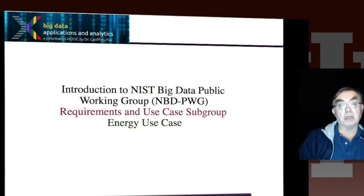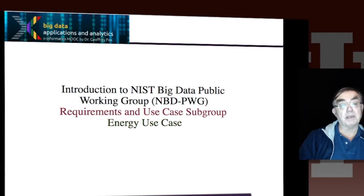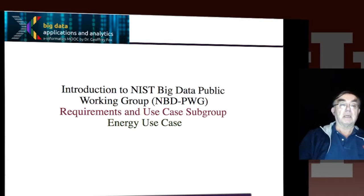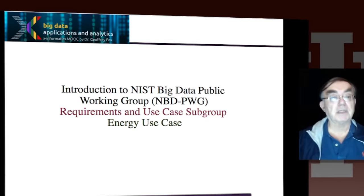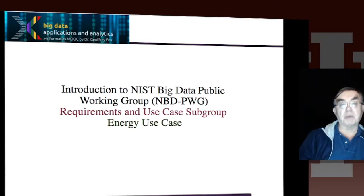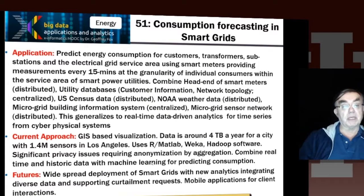So that's the end of the Earth, Environmental and Polar Science set. They have a lot of commonality because they all involve GIS. There was a lot of interest in the environment and integrating the different types of environmental data. That was particularly dramatic in the one before last, where we were using genomic data as well as macroscopic data.